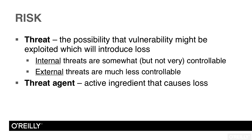Consider the example of an employee who got his job only so that he could steal something out of the warehouse. He's an internal entity, but because he has malicious intent, he still isn't terribly controllable. Of course, security controls and countermeasures are in place to defend against this possibility — controls to detect him and prevent the loss. But if the bad guy really is on the inside and wants to do bad things, you still can't control him very well.